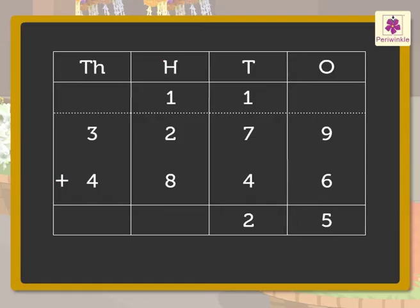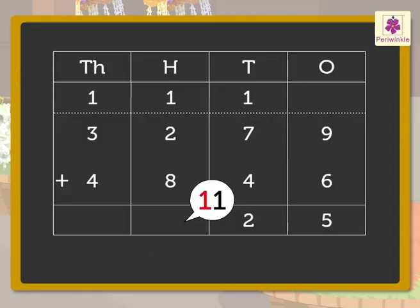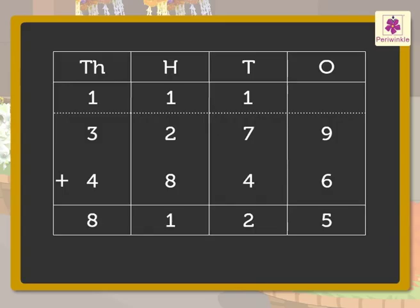Next, add the hundreds: one, two, and eight. We get the number eleven. Regroup eleven hundreds — eleven hundreds equals one thousand and one hundred. Carry one thousand to the thousands column and write one in the hundreds column. Now add the numbers in the thousands column: one, three, and four. We get eight, which we write in the thousands column.